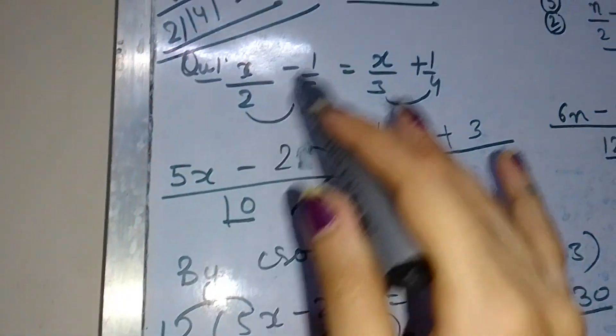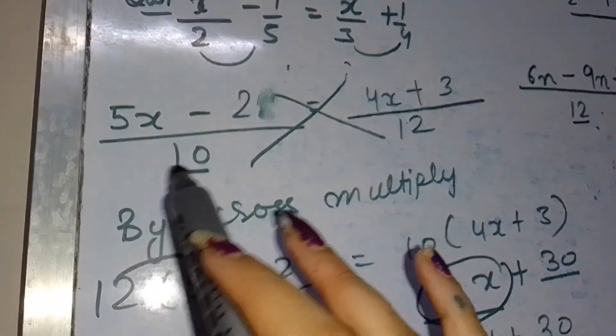Let's consider first: x upon 2 minus 1 upon 5 is equal to x upon 3 plus 1 upon 4.